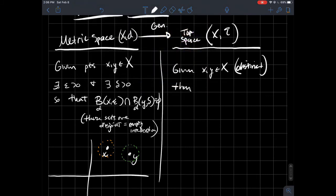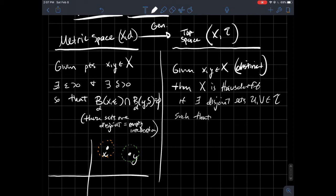So then we say X is Hausdorff if there exist disjoint sets U and V that are elements of your topology such that x is in U and y is in V.